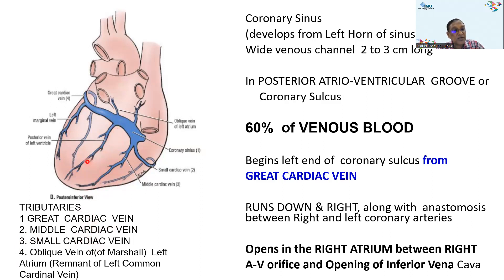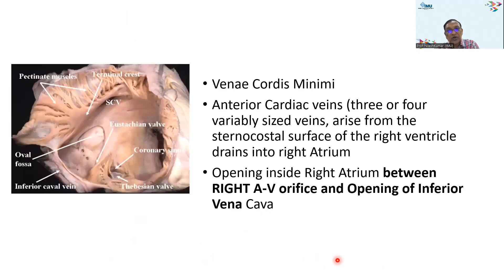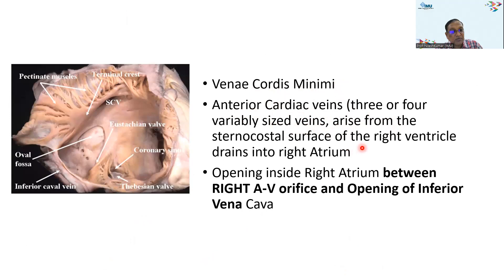Two veins do not drain into the coronary sinus and instead drain directly into the right atrium: the anterior cardiac vein, which lies in the atrioventricular groove alongside the right coronary artery, and the venae cordis minimae (Thebesian veins). The anterior cardiac veins are variably sized veins arising from the sternocostal surface of the right ventricle.